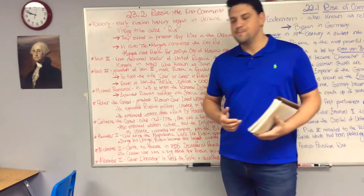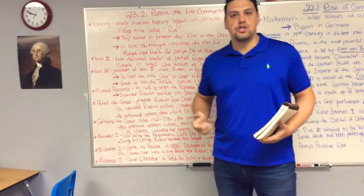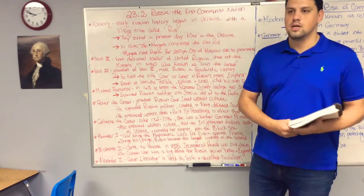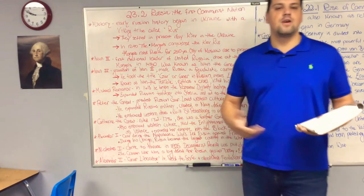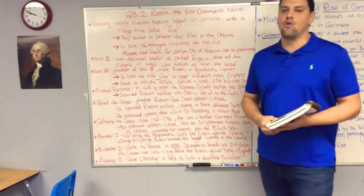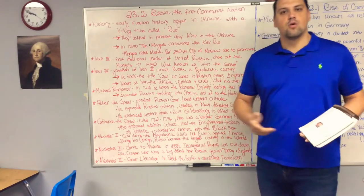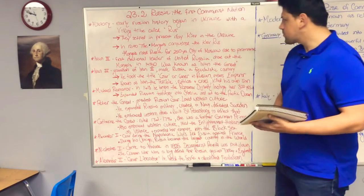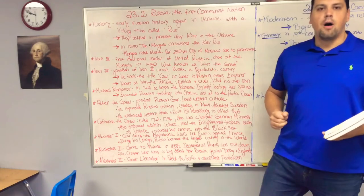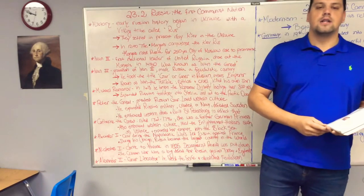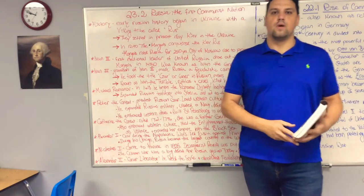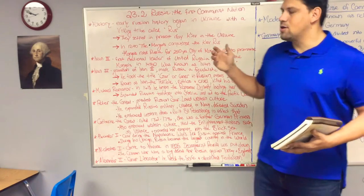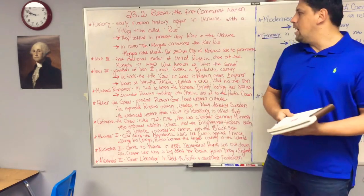Before we talk about Russia as a communist country, let's talk about Russian history. Russian history began in Eastern Europe in the early 1200s. There was a Viking tribe called the Rus who settled in Eastern Europe. They are Slavic people and settled in present-day Ukraine in a town called Kiev. This is how they earned the nickname the Kievan Rus. In 1240, the Mongols swept from the east and came towards Europe all the way up to the Danube River, actually defeating the Kievan Rus.